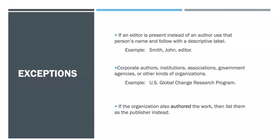This is where things can get tricky with exceptions in MLA. Author refers to the person or group responsible for the work. If the author is an editor, follow the name with a label describing the role and put the name in the author element. Corporate authors — institutions, associations, government agencies, or other organizations — can be used as authors. Be aware that if the work is published by an organization that also authored it, list them as the publisher. If there is no author, editor, or corporate author, skip the author element and begin your citation with the title of the work.